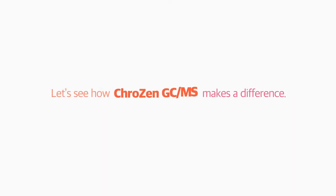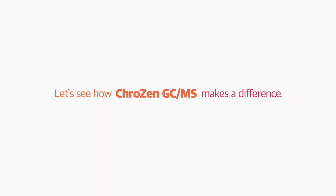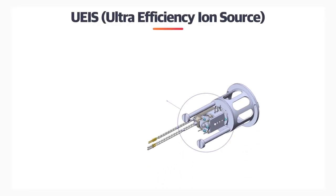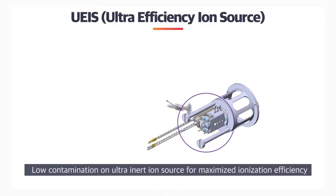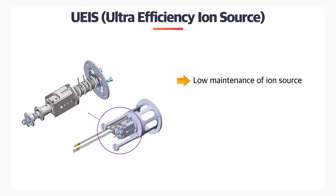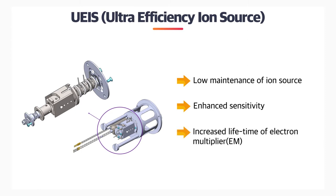Let's see how Crowzen GC-MS makes a difference. Low contamination on the ultra-efficiency ion source maximizes ionization efficiency. This state-of-the-art UEIS ion source has low maintenance, enhances sensitivity, and increases the lifetime of the electron multiplier.